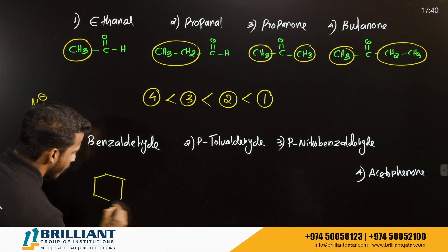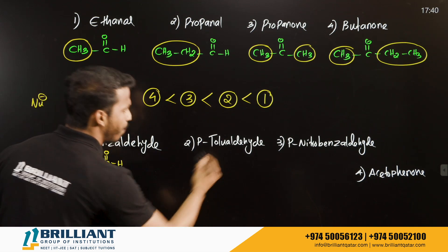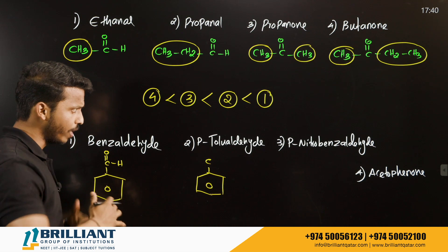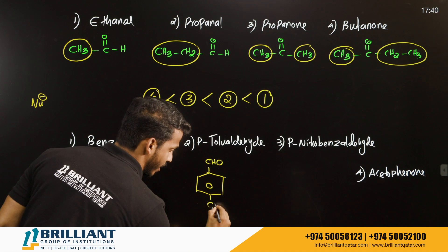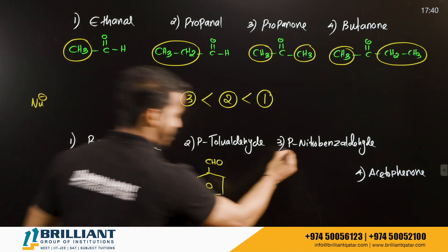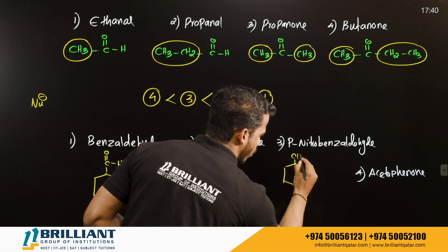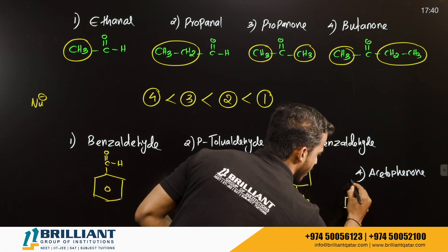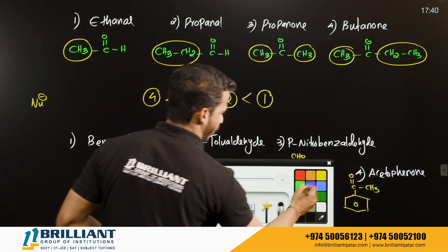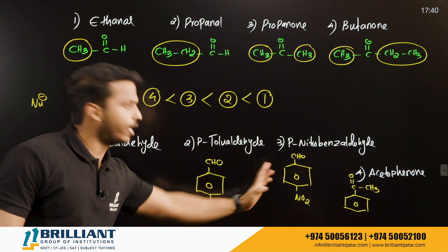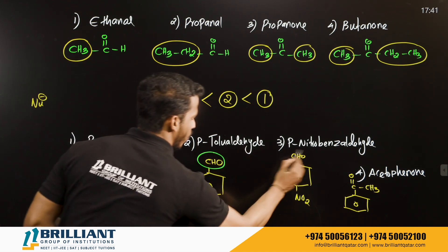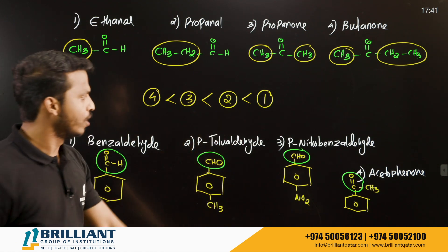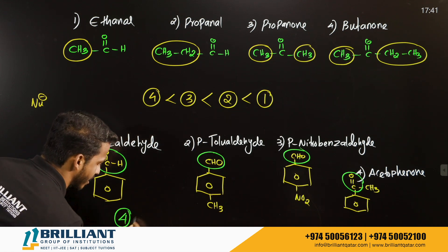Next question involves: benzaldehyde (C₆H₅CHO), para-tolualdehyde (CHO with para-CH₃ on benzene), para-nitrobenzaldehyde (CHO with para-NO₂ on benzene), and acetophenone (C₆H₅COCH₃). The first three are aldehydes; acetophenone is a ketone. Since aldehydes are more reactive than ketones, acetophenone is the least reactive.